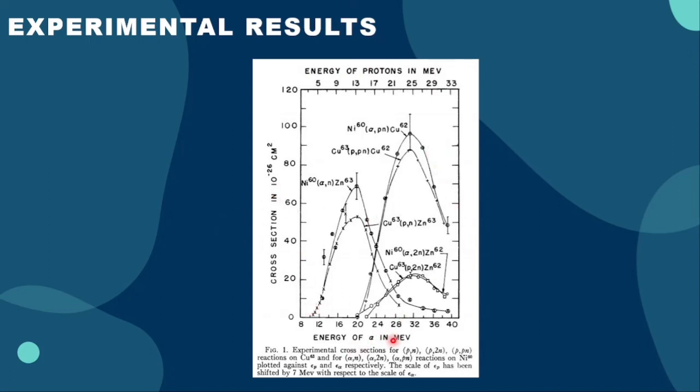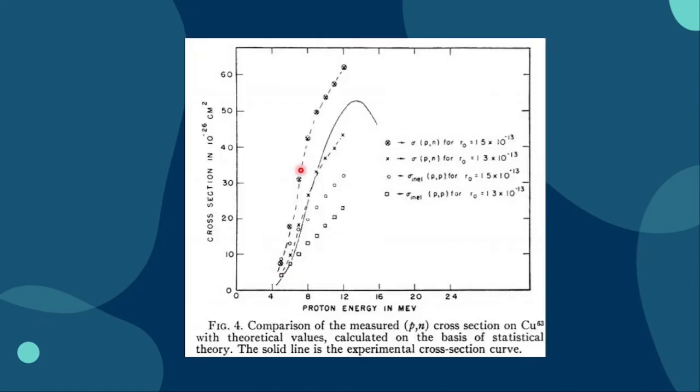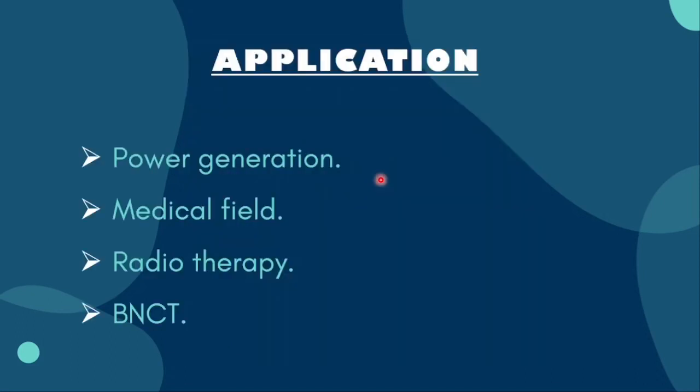The kinetic energy of the proton required to produce an excitation E of the compound nucleus zinc-64 will be different from the kinetic energy of the alpha particle to produce the same excitation in zinc-64. This difference is due to the difference in the masses of copper-63 plus hydrogen-1 and nickel-60 plus helium-4. In this curve, we can see the comparison of the measured p-n cross-section on copper-63 with theoretical values which was calculated on the basis of statistical theory. This solid line is the experimental cross-section curve.